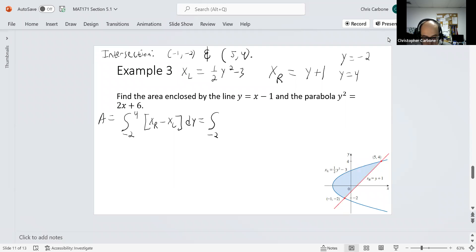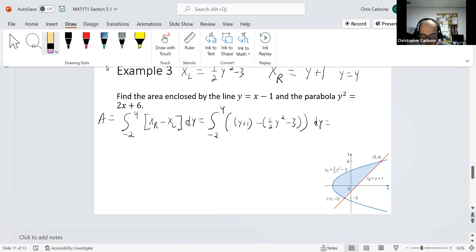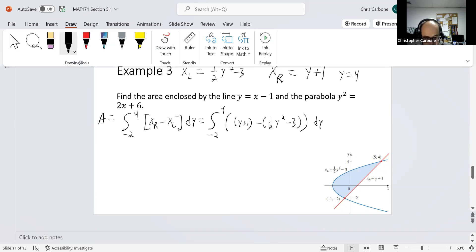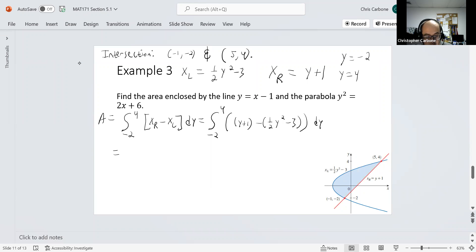Integral from negative 2 to 4 of y plus 1 minus one half times y squared minus 3 dy. From that, this would become the integral from negative 2 to 4 of negative one half y squared plus y plus 4 dy.